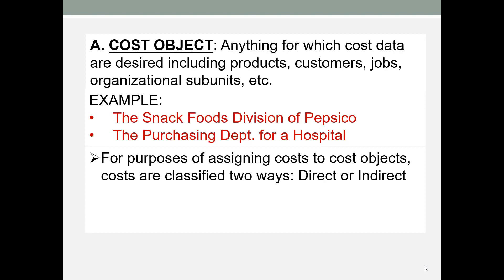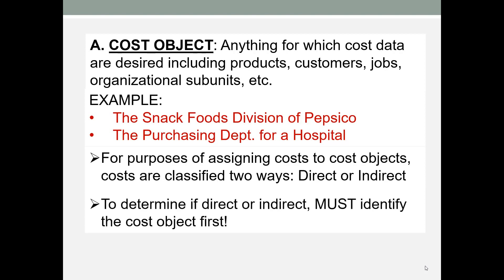When we are assigning cost to cost objects, they will either be classified as a direct cost to the cost object, or an indirect cost to the cost object. You must first identify the cost object before you can classify a cost as direct or indirect.